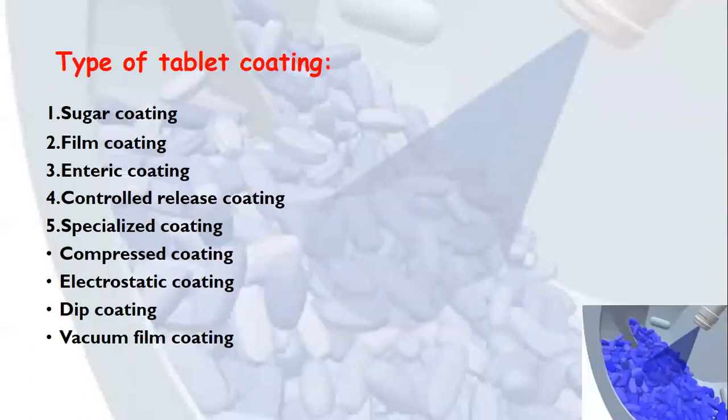Different types of tablet coating are: sugar coating, film coating, enteric coating, controlled release coating, and specialized coatings such as compressed coating, electrostatic coating, dip coating, and vacuum film coating.